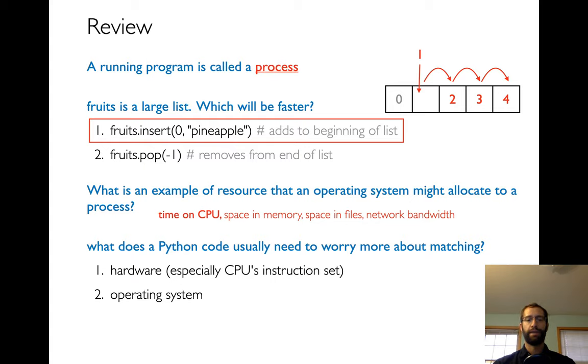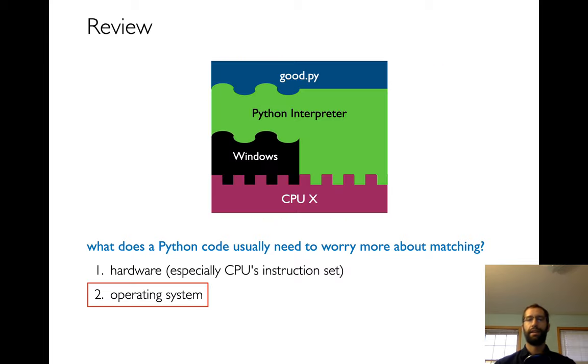The last one, which has to do with reproducibility. If we were writing some Python code, what do we have to worry more about matching? Do we have to worry about what hardware we're running on? And the main thing with hardware here is the CPU and its instruction set. Remember that the instruction set is this big table where we have all these operations in it and each operation has a number. So for example, maybe five means add, right? That's instructions that a CPU has. Maybe five means something else in a different CPU's instruction set. So that's the hardware. Another answer is the operating system. And the answer here, the correct answer is that we have to worry about matching the operating system.